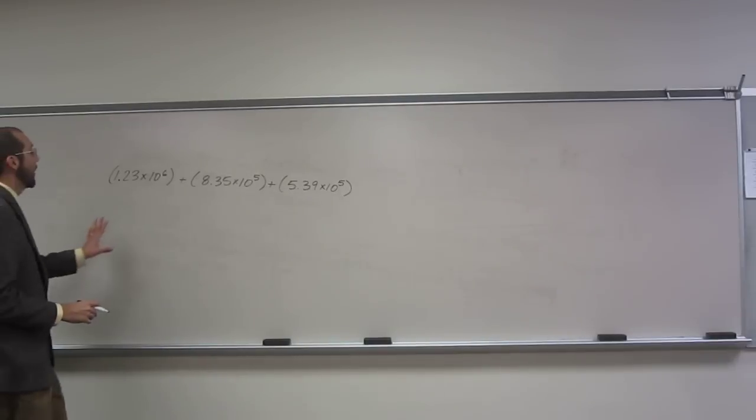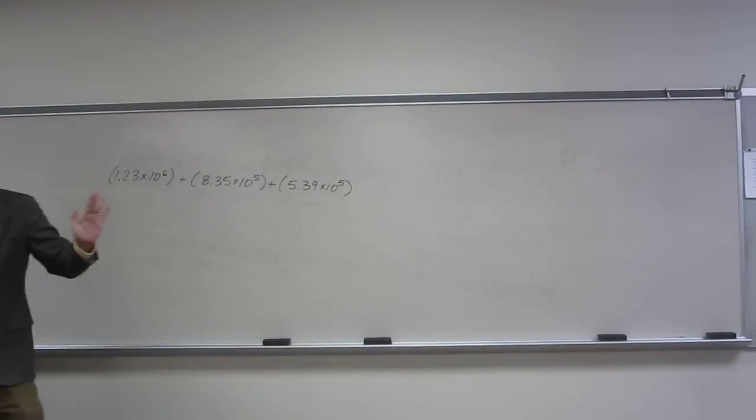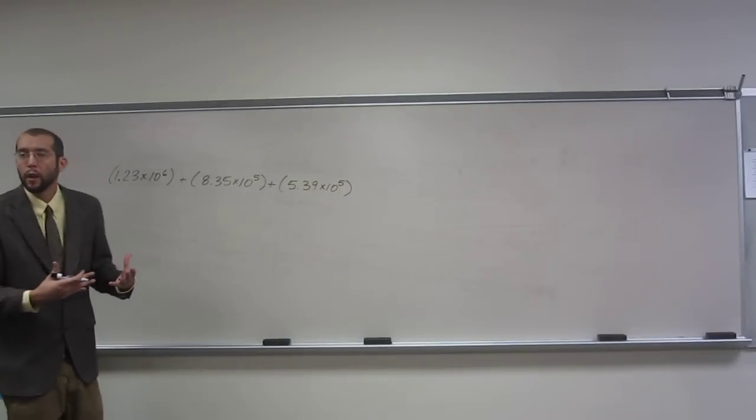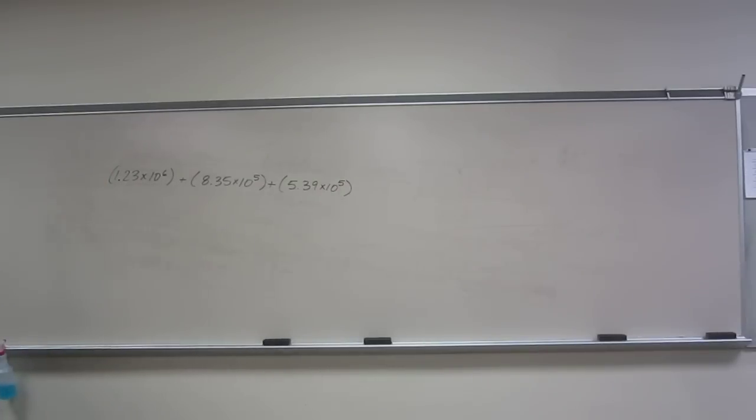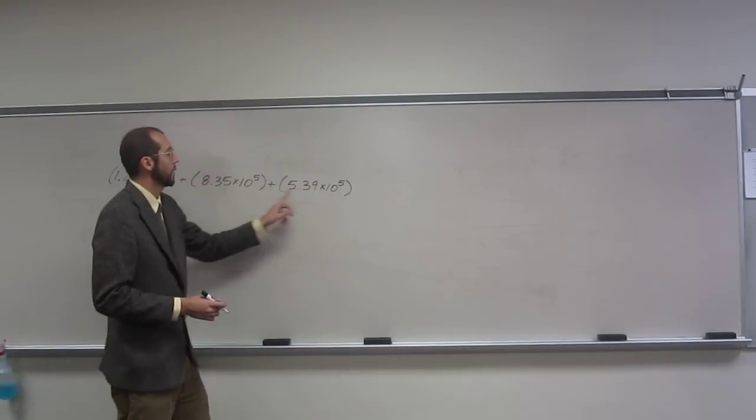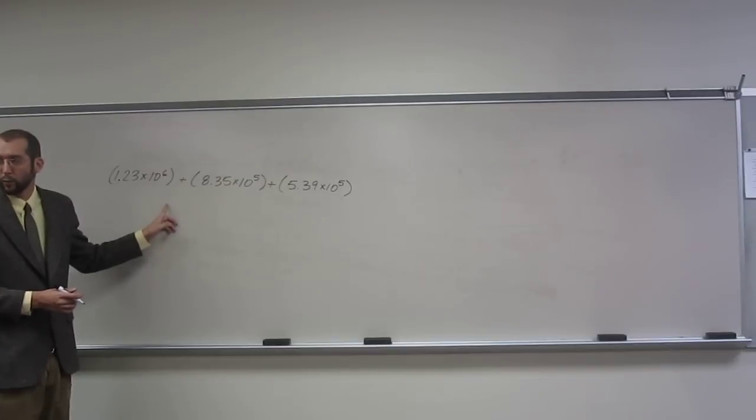So remember when you're doing addition of significant figures you have to go to the number that has the least amount of significant figures after the decimal point. So in order to do that you want to effectively find a common multiplier for all of these. So this one has 10 to the 6th, this one has 10 to the 5th, this one has 10 to the 5th, so you probably want to change this one to 10 to the 5th as well.